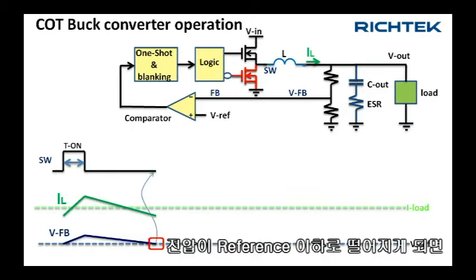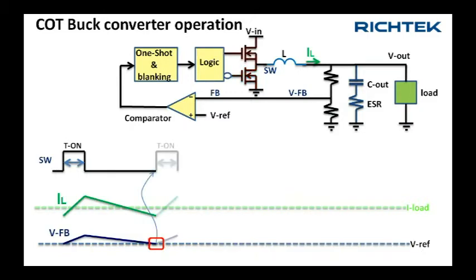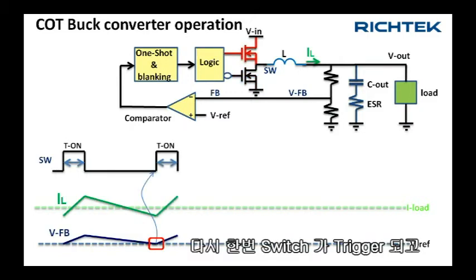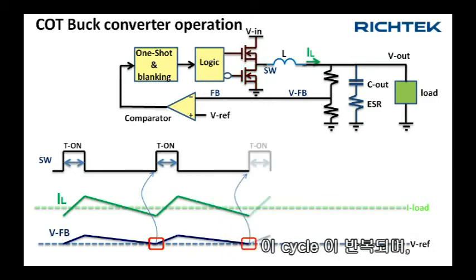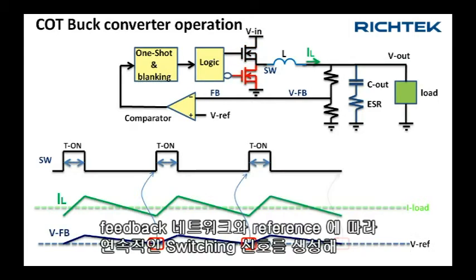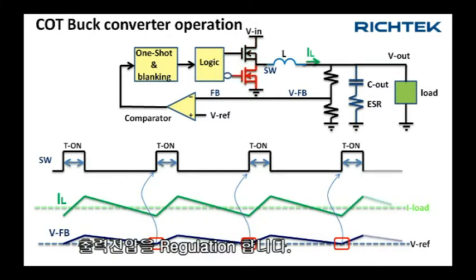When it drops below the reference, the one-shot is triggered again and the cycle is repeated, producing a continuous switching signal with an output voltage regulated by the feedback network and reference.